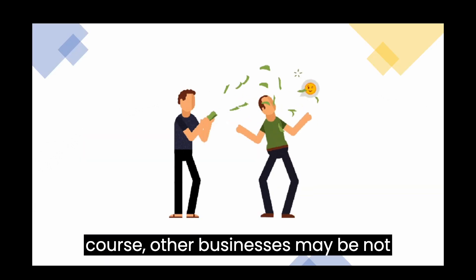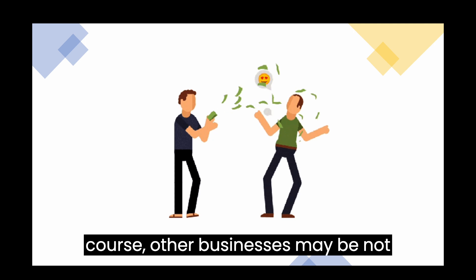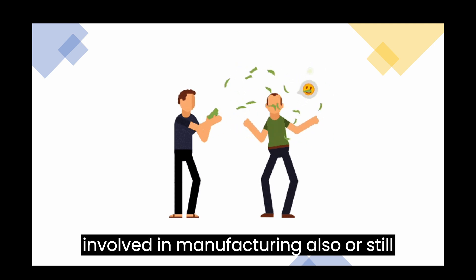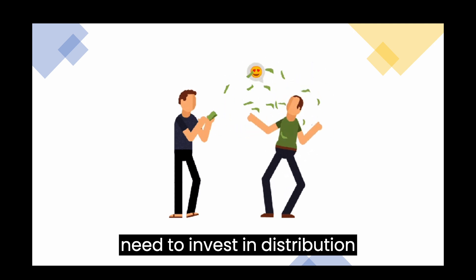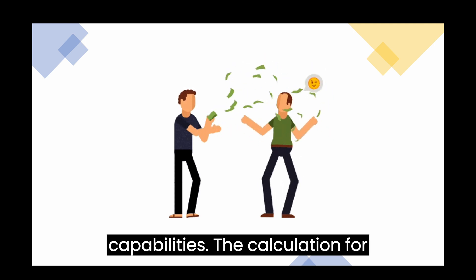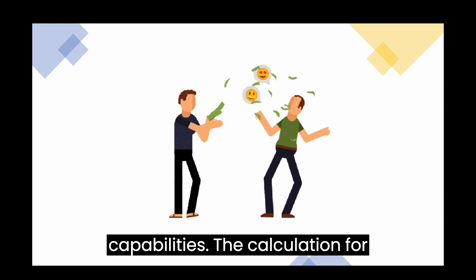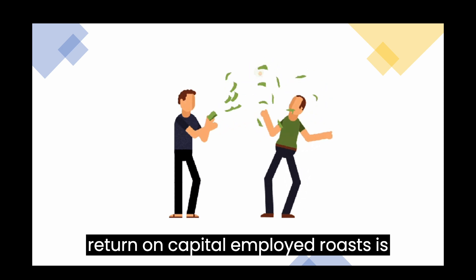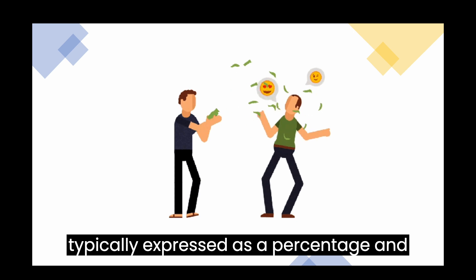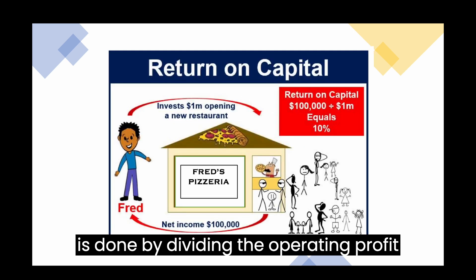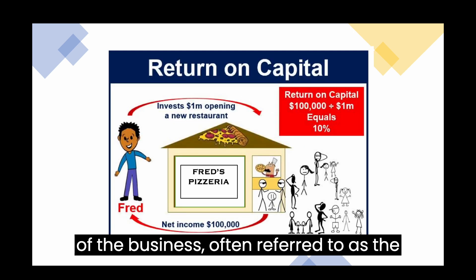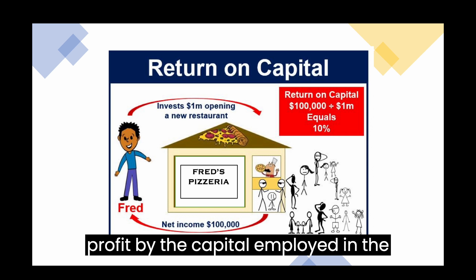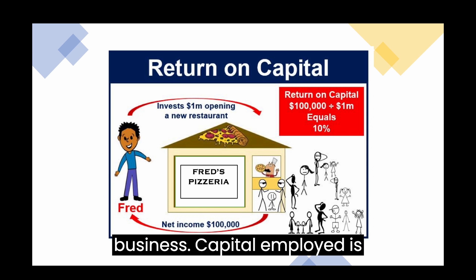Of course, other businesses may not be involved in manufacturing but still need to invest in distribution capabilities. The calculation for Return on Capital Employed (ROCE) is typically expressed as a percentage and is done by dividing the operating profit of the business — often referred to as the operating profit, or occasionally the net profit — by the capital employed in the business.